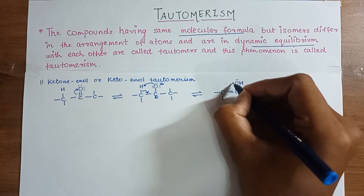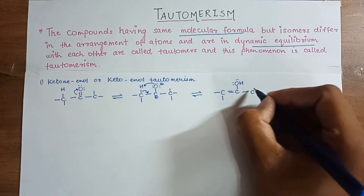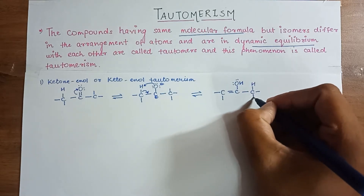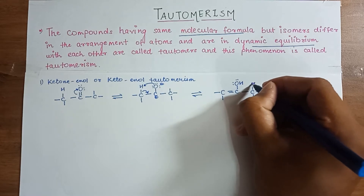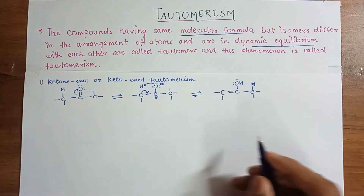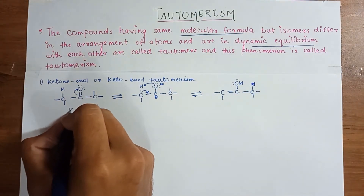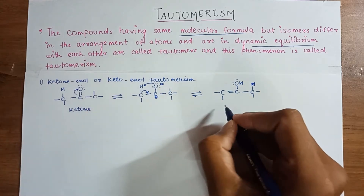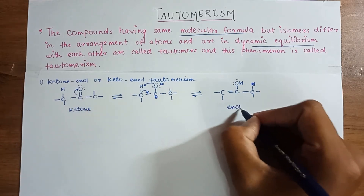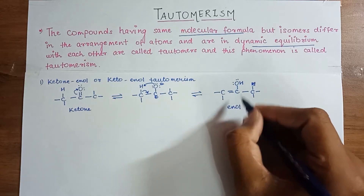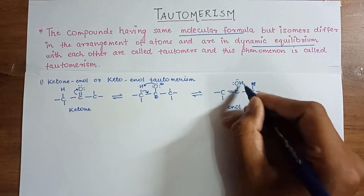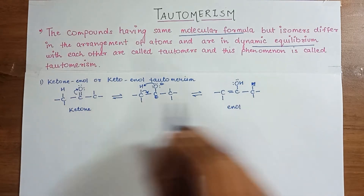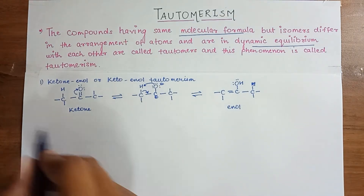This gives us the enol form with an O-H group and a C=C double bond. This is the ketone form, and this is the enol form. Enol means it has a double bond along with an alcoholic group. So this ketone and enol will be in dynamic equilibrium with each other.